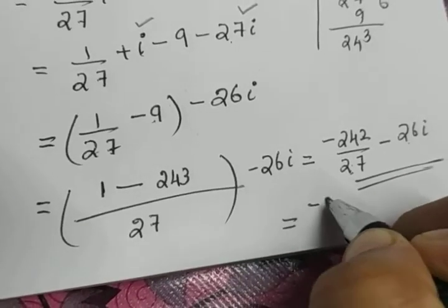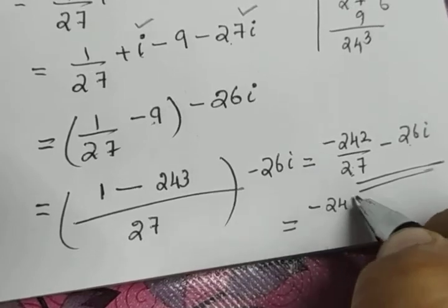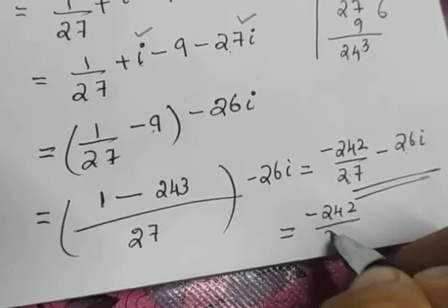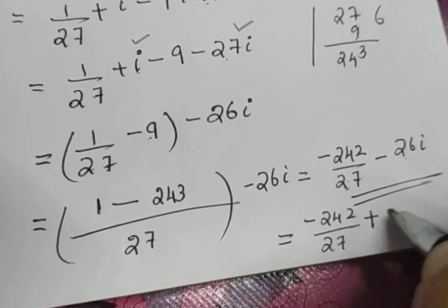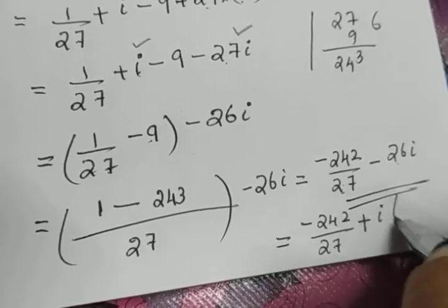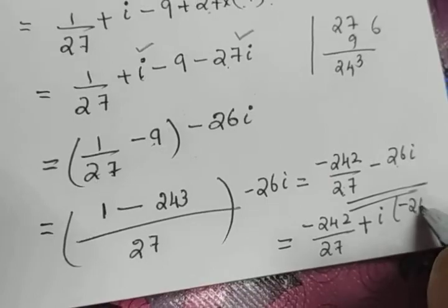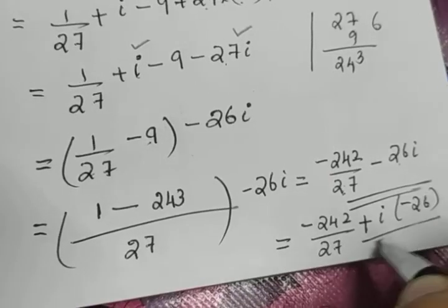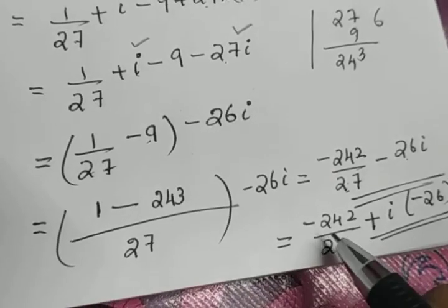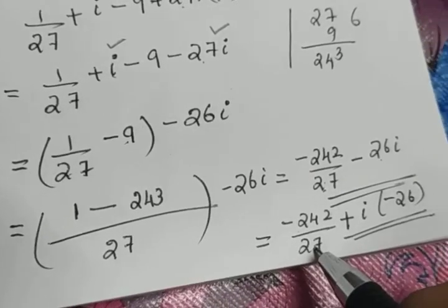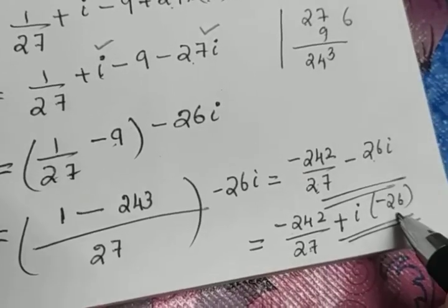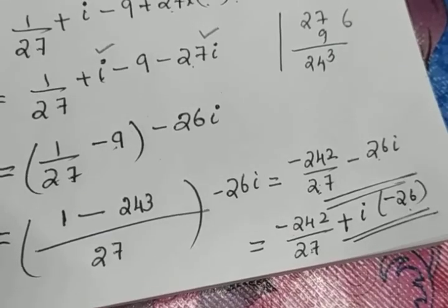Otherwise, you can rewrite it as minus 242 by 27 plus i into minus 26, so that a and b are clear: a is minus 242 by 27 and b is minus 26.